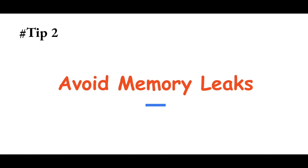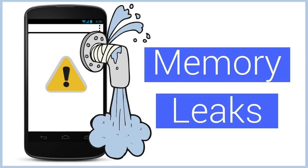Your second tip to improve React Native mobile application performance is: avoid memory leaks. On Android devices, extra processes running in the background can lead to memory leakage in your application, so please avoid those background processes. To stop memory leaks, avoid using ListView — it is deprecated in React Native. Instead, use FlatList or SectionList, which will boost your application performance.